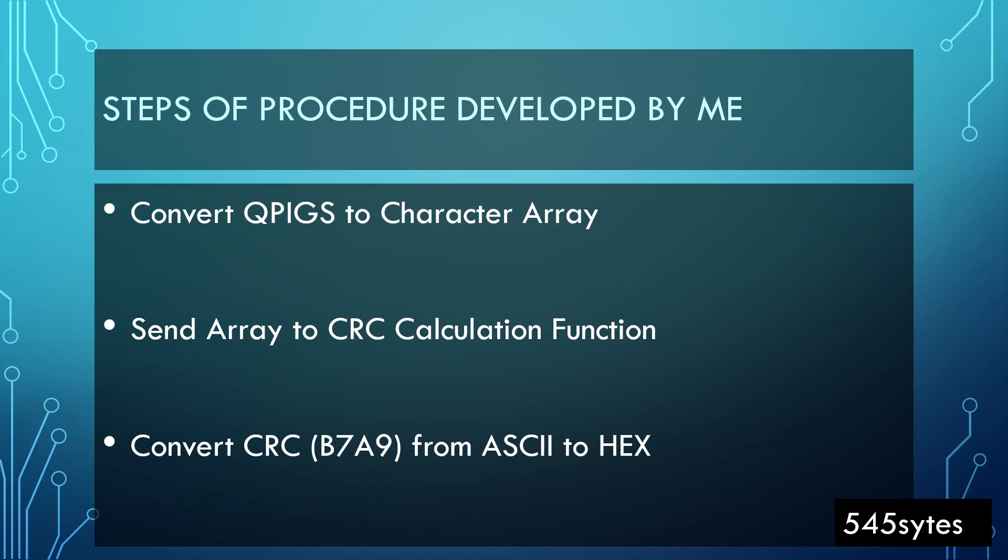In short, the steps of the procedure developed by me includes: first conversion of QPIGS to character array, then send array to CRC calculation function, and then convert the CRC that we have received from this calculation function from ASCII to hexadecimal format so that Arduino could understand the result is not in ASCII but it's in hexadecimal and they are numbers.